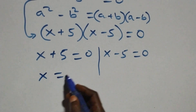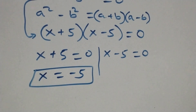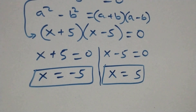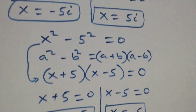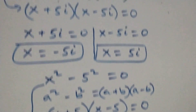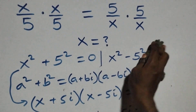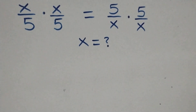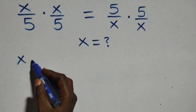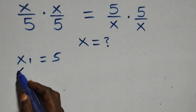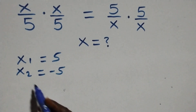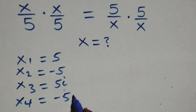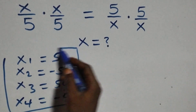This gives us x equals minus 5, which is a real solution, and x equals 5, which is also a real solution. This implies we have two real solutions and two complex solutions, making four solutions together. We can write: x1 equals 5, x2 equals minus 5, x3 equals 5i, and x4 equals minus 5i — four solutions: two real and two complex.